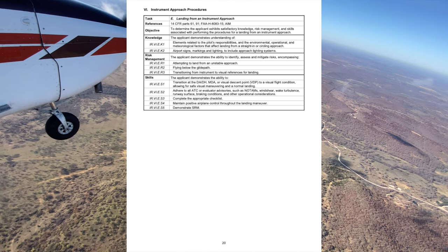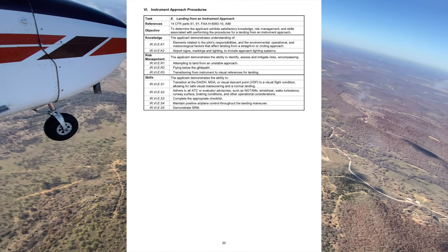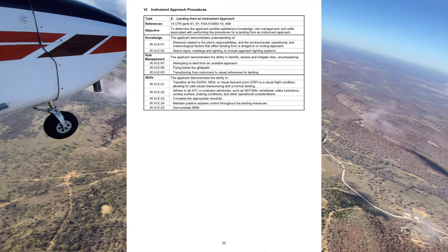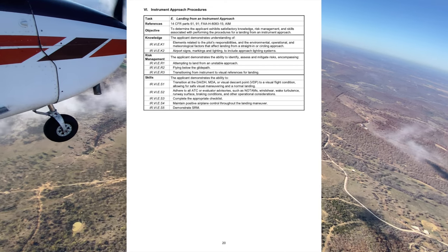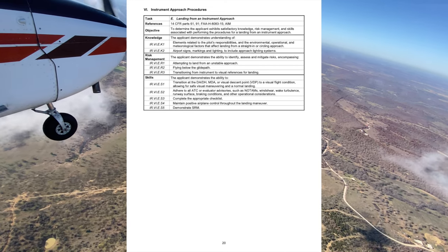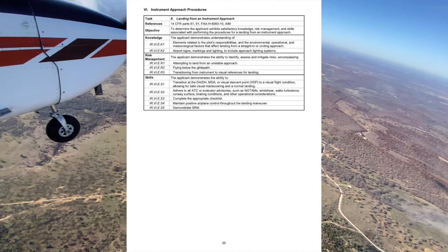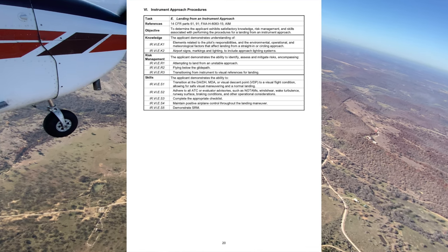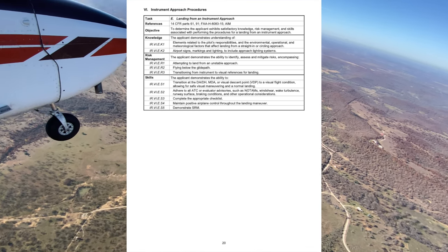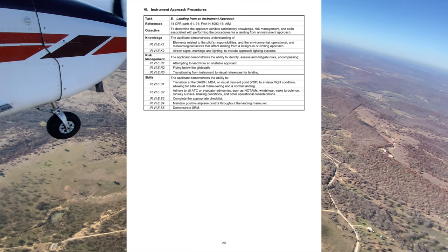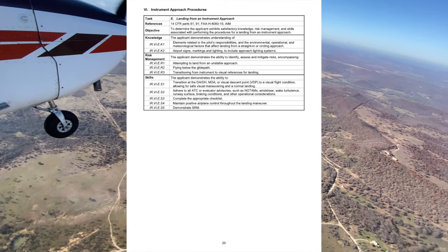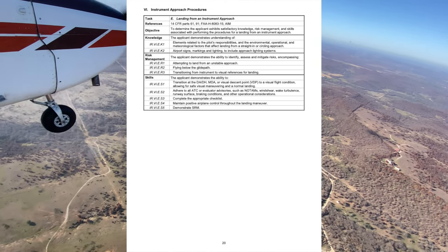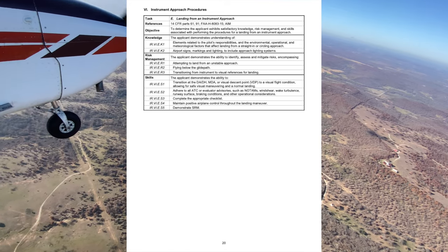For circling distances, the category of your aircraft must be referenced at 1.3 times the VSO of your aircraft to determine your CAT A, B, C, D, or E category. If you go missed while circling and at any point lose visual reference of the airport, immediately go missed. Make an initial climbing turn toward the landing runway, then maneuver to intercept and fly the missed approach procedure, adhering to the clearance to remain clear of obstacles.